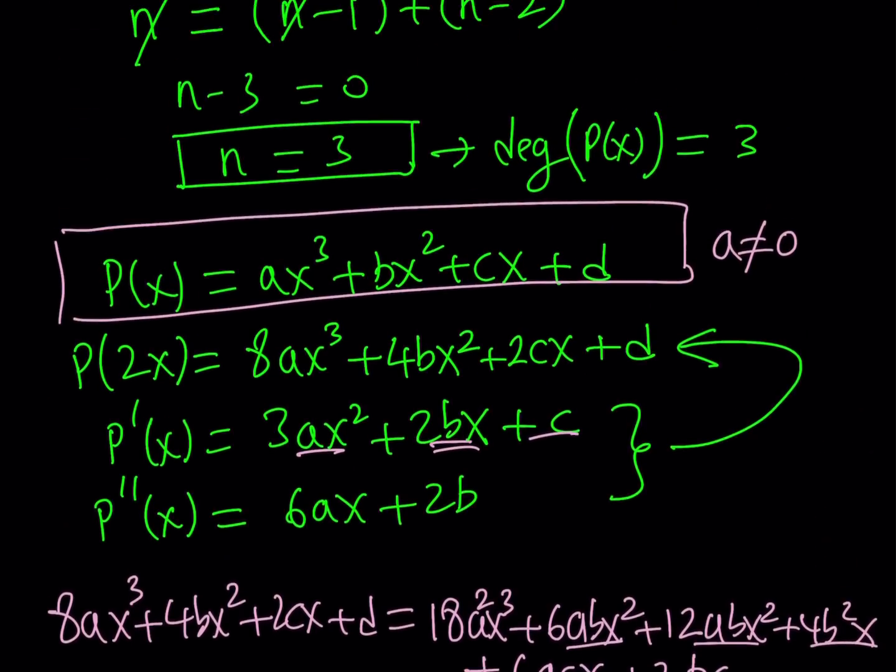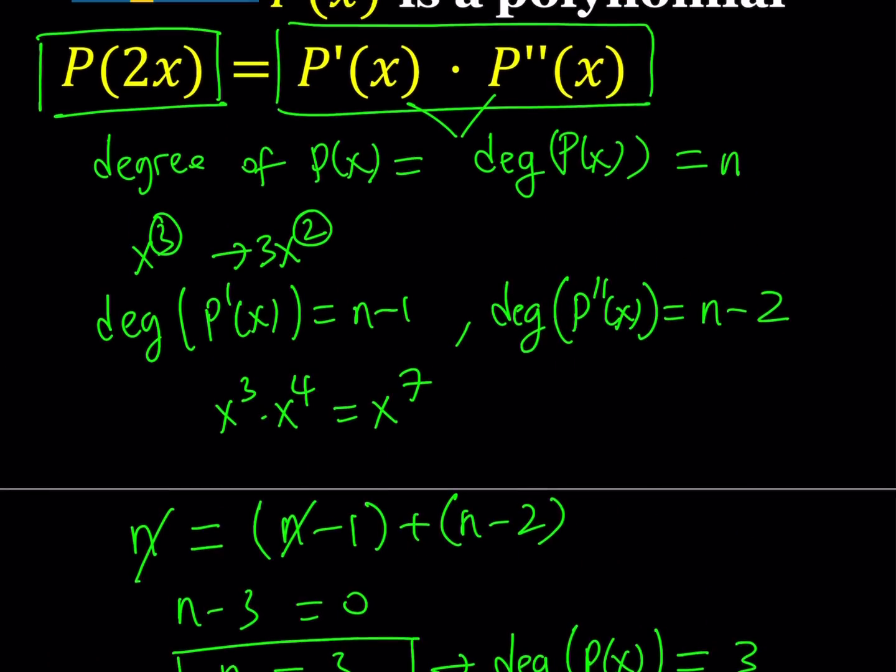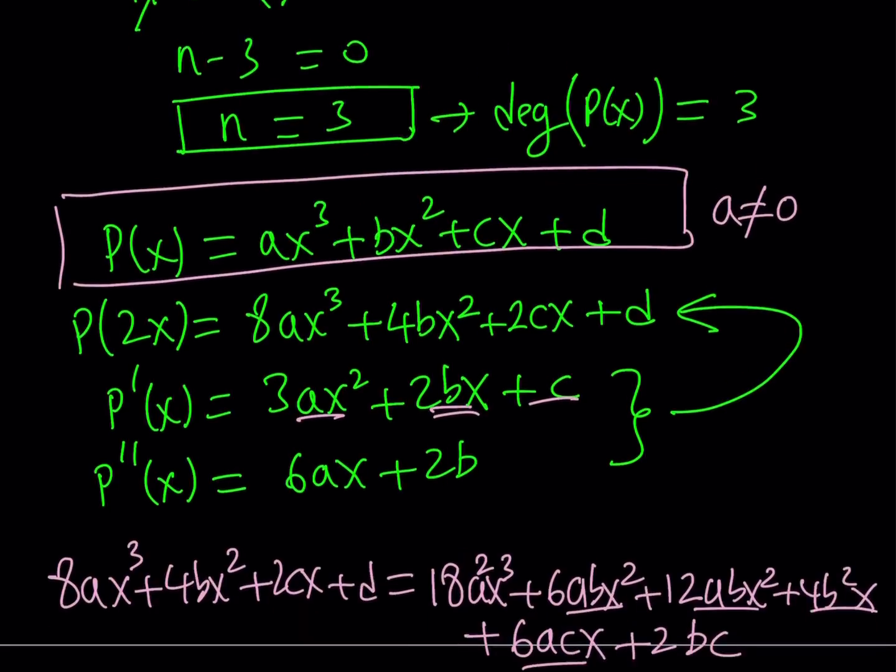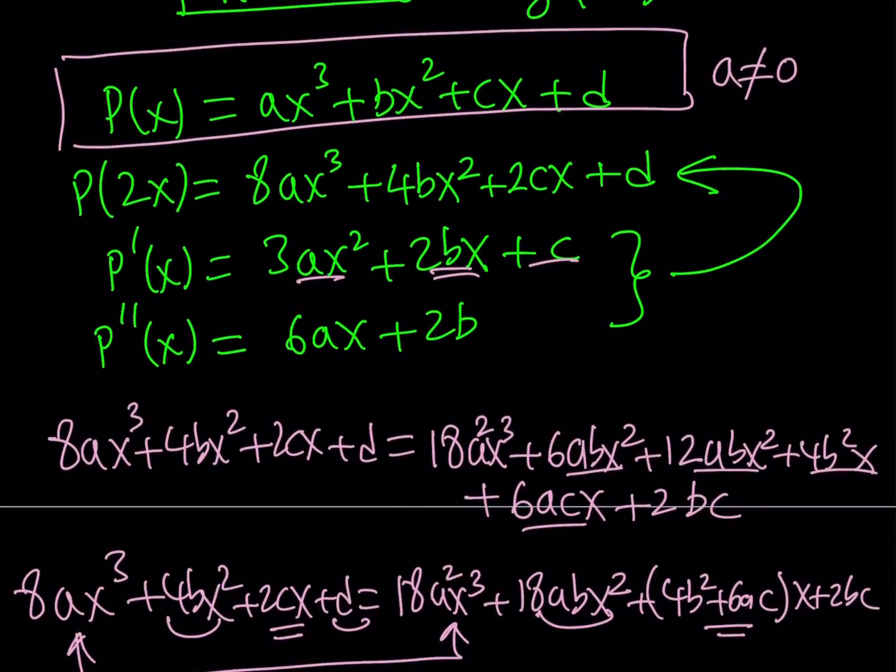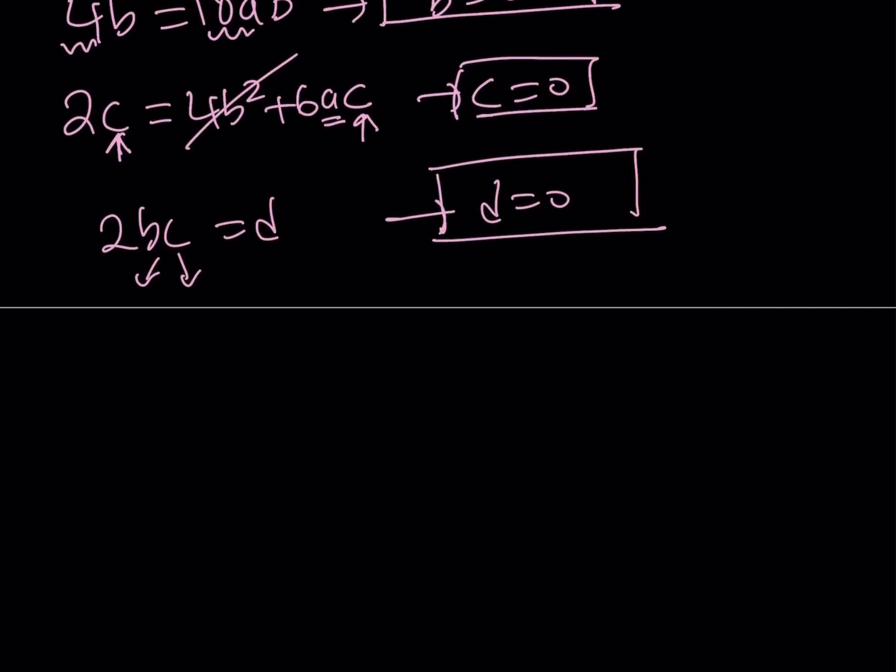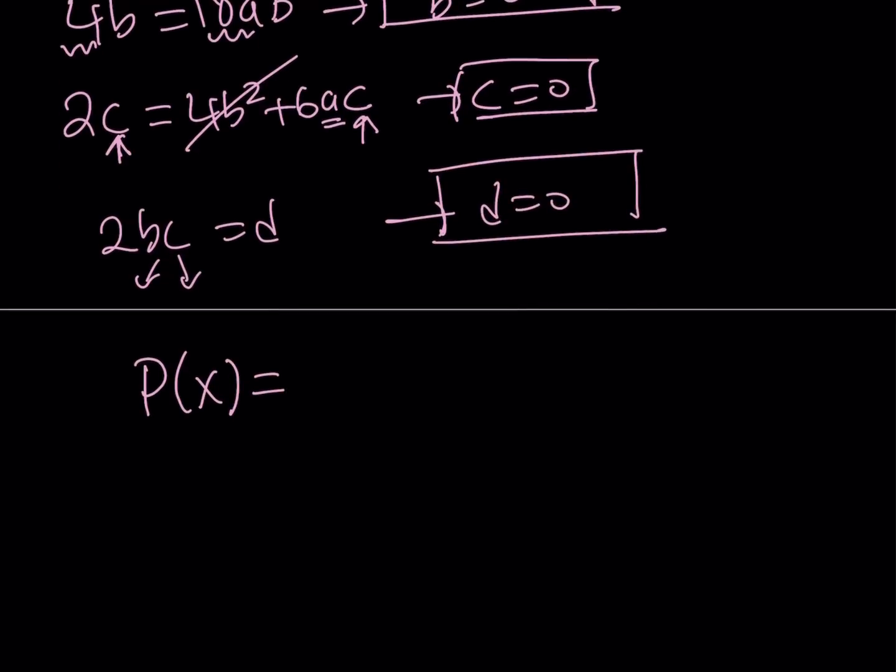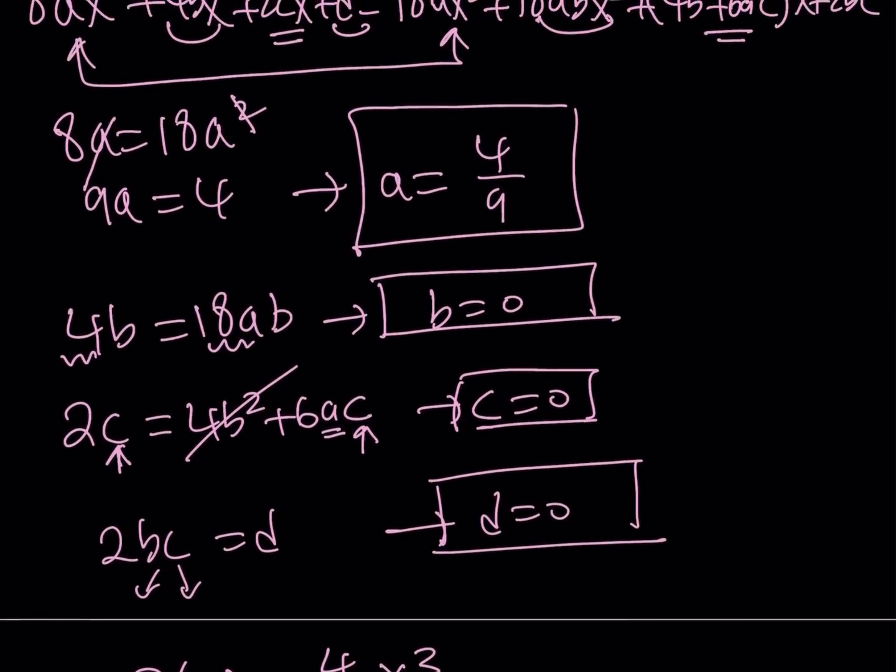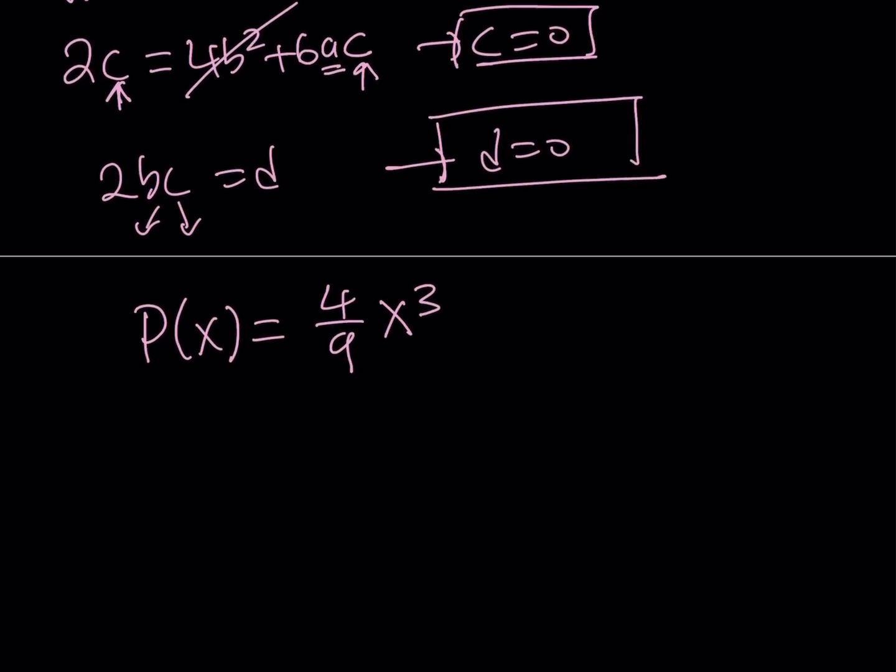We are trying to solve for P(x), and P(x) can be written as ax³ + bx² + cx + d. But everything except for a is 0. Therefore P(x) can be written as, and our a value is 4/9, so (4/9)x³. That should be our solution, and that should be the only solution since this is a polynomial.